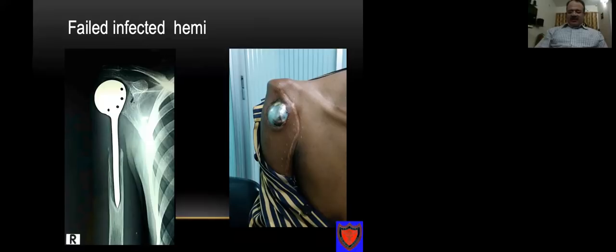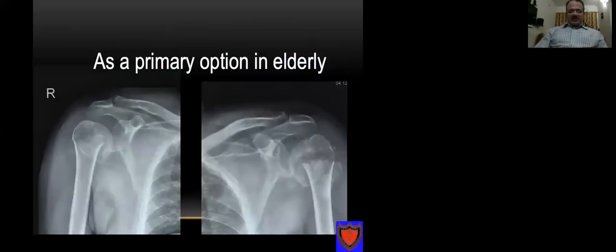Failed tuberosity fixation associated with arthritis is again an indication, as is failed infected hemi-arthroplasty requiring a two-stage revision, provided the deltoid is intact. An intact deltoid is a prerequisite for performing reverse shoulder. Sometimes it can be a primary option in elderly patients with severely comminuted fractures, where one can perform primary reverse shoulder in patients more than 75 years.